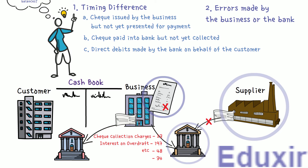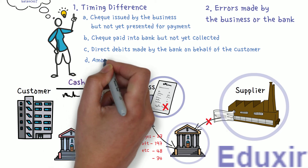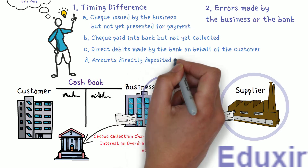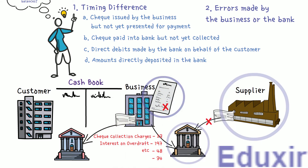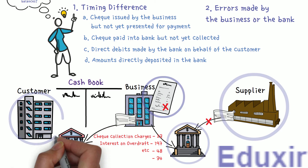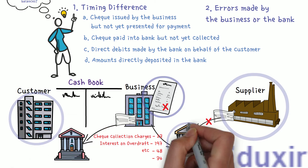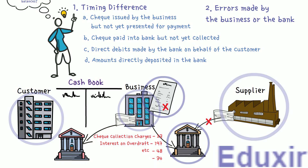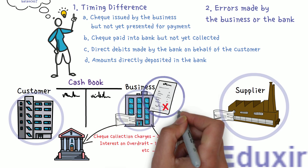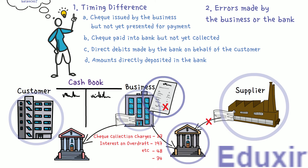The next reason is amounts directly deposited in the bank account. In some cases, debtors or customers directly deposit money into the firm's bank account, but the firm does not know about these deposits until the bank statement is received. The bank records the receipts in the bank passbook, but it will not be recorded in the firm's cashbook, resulting in a difference between the two balances.